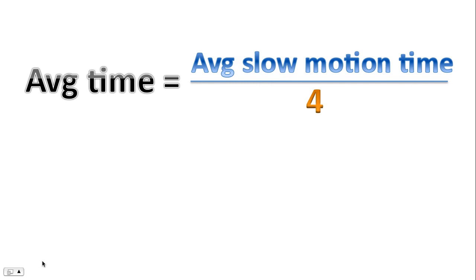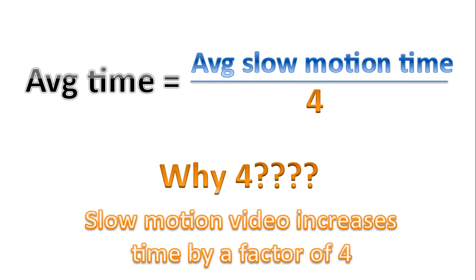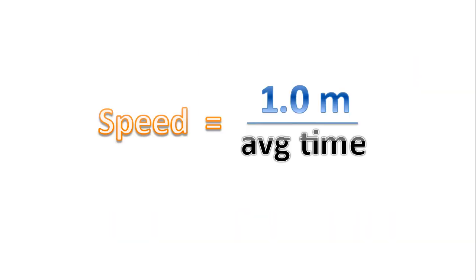To calculate average time, we're going to take our average slow motion time and divide by four. We're dividing by four because we're watching the videos using slow motion — slow motion actually increases the time by a factor of four. Then calculate the speed using this equation: distance over time.